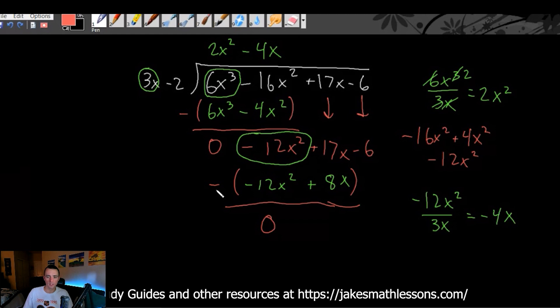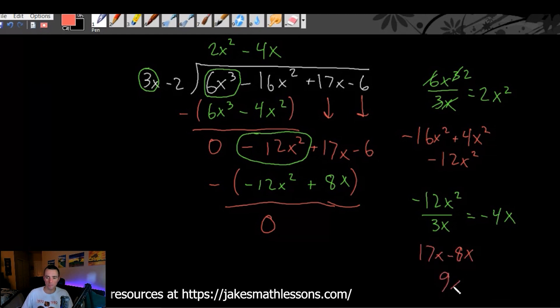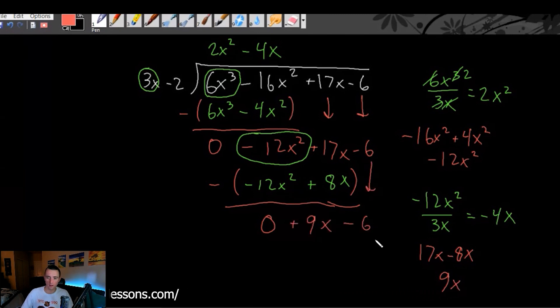Then we're going to have 17x minus 8x. 17 minus 8 would be 9. So we'll have 9x plus 9x, and then carry down the negative 6.